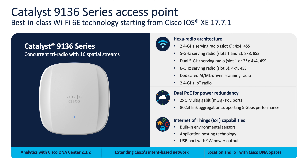The Cisco Catalyst 9136i is Cisco's first Wi-Fi 6E access point. It has an incredible hexaradial architecture and many other features that make it their current flagship product.